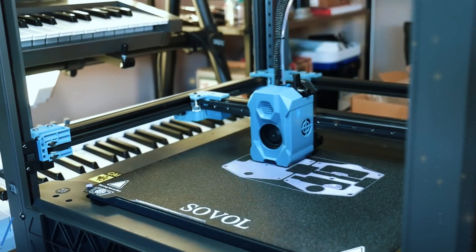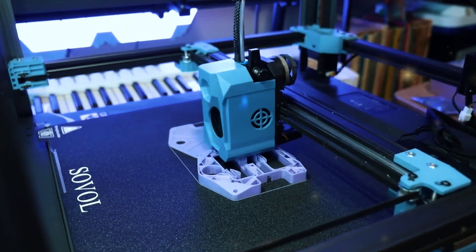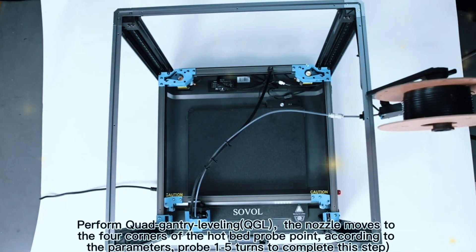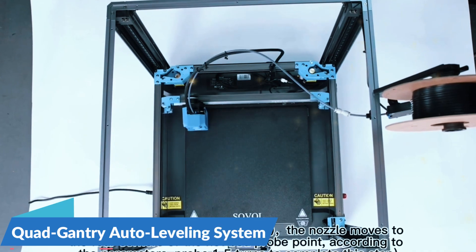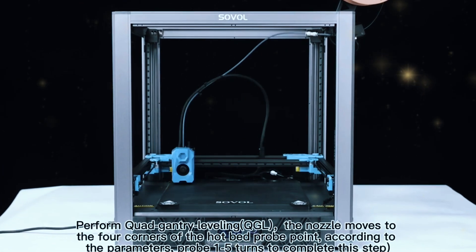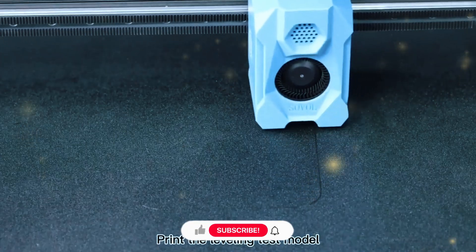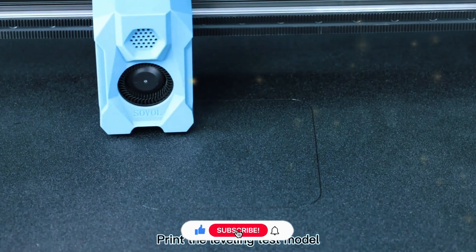It also comes equipped with linear rails on all seven axes, ensuring smooth and precise movements for consistent print quality. One of the key features of the SV-08 is its Quad Gantry Auto Leveling System. This system uses four independent Z motors to keep the print bed perfectly level, which helps avoid printing failures and guarantees that your first layer goes down smoothly every time.